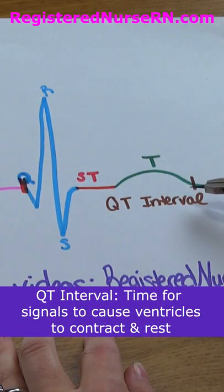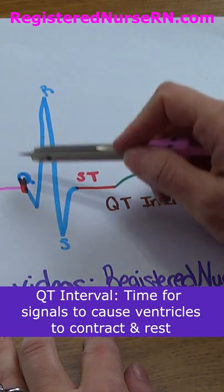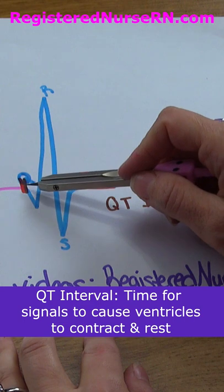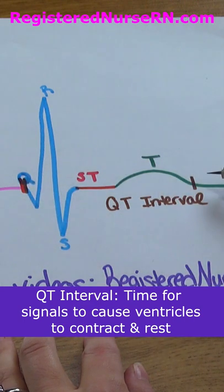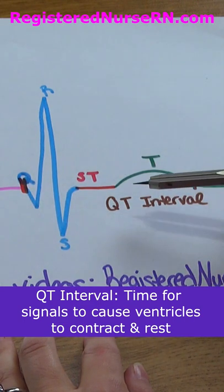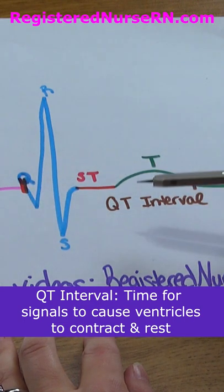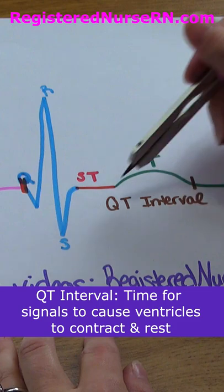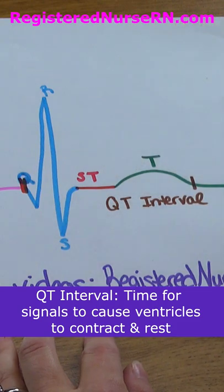Then we have the QT interval, which starts at the beginning of the QRS and ends at the end of the T wave. This is the time it takes for electrical signals to cause the ventricles to contract and rest.